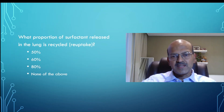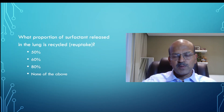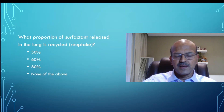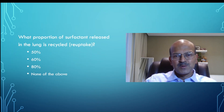Surfactant is produced in the type 2 pneumocytes in the lung, and the majority of it — around 80% — is re-uptaken back into the pneumocytes and recycled by release again. This is a very important aspect to remember. The conditions which have secondary surfactant deficiency cause surfactant deficiency by reducing this re-uptake or by inactivating the surfactant in the alveoli, preventing the re-uptake.